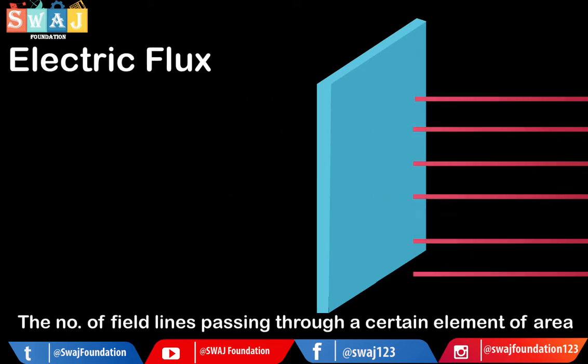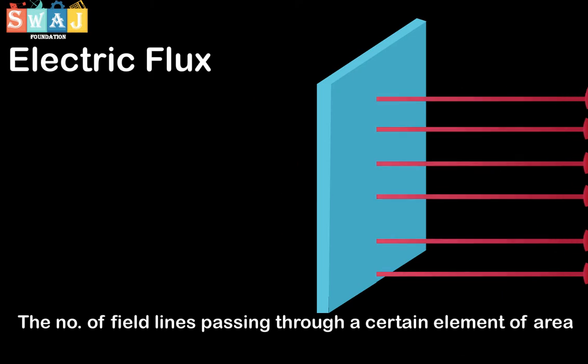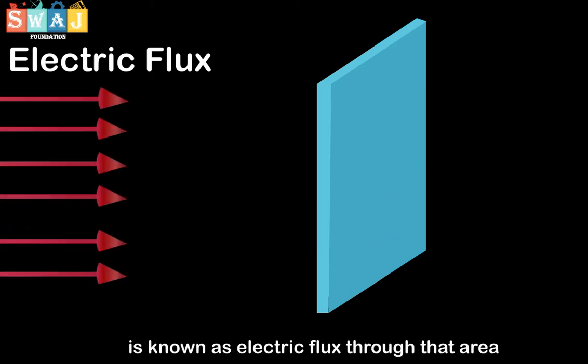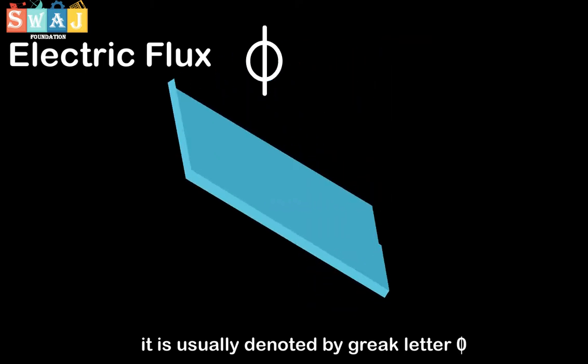Electric flux. The number of field lines passing through a certain element of area is known as electric flux through that area. It is usually denoted by Greek letter Phi.